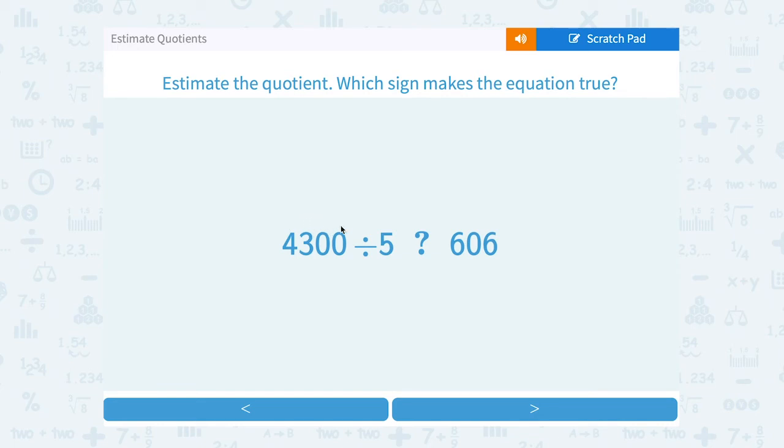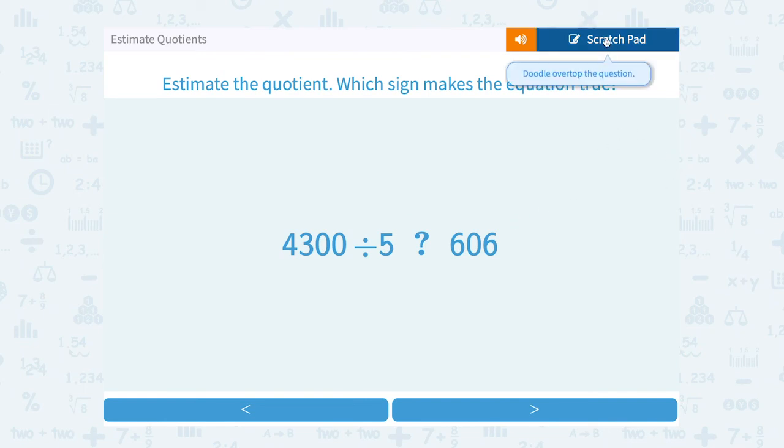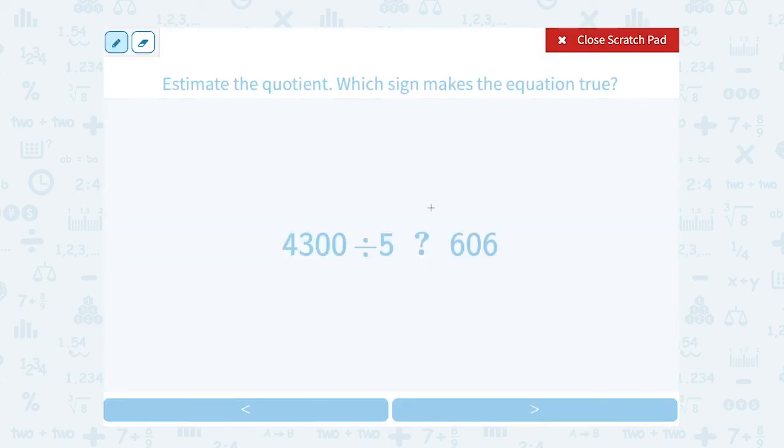4,300 divided by 5, and I want to compare that to 606. So again, I want to round this off to a number that I'm going to easily be able to divide by 5.